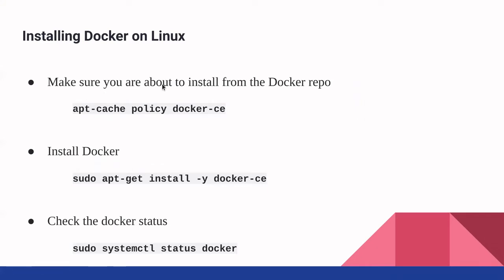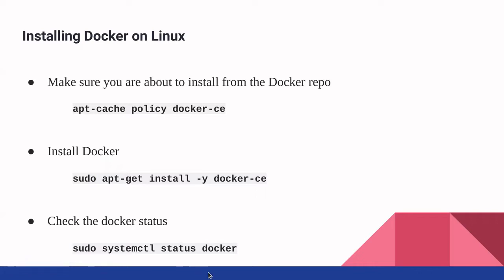Next, to make sure that you are about to install from the Docker repository, you can do that using this apt-cache command. Then after that, you are good to install Docker. For that, you can use this sudo apt-get install -y docker-ce command. Then after following these steps, finally you can check the status of Docker using this sudo systemctl status docker command.